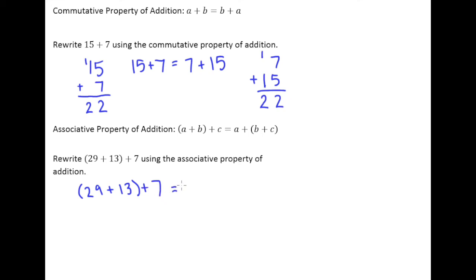And what the associative property says is that instead of adding 29 and 13 together first and then adding 7, I could add 13 and 7 first and then add that sum to 29.